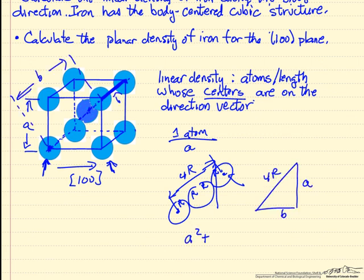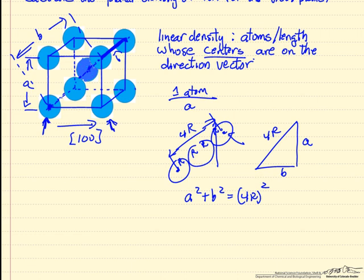So I know a² + b² = (4r)². I have to first calculate b.